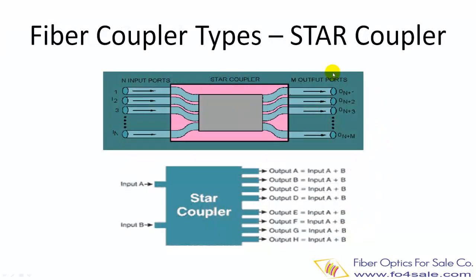Another type is called star coupler. Star couplers have multiple inputs and outputs. The input and output port number can be the same or not, such as 2x2, 4x4, 8x8, etc. A star coupler distributes input light power equally among all output fibers. The top picture shows an NxN star coupler, and the bottom picture shows a 2x8 star coupler.